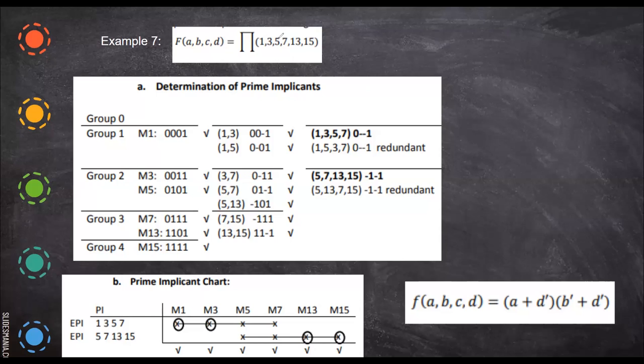Okay, now in this video, we are going to consider the product of sums for prime implicants. We are going to use the tabulation method for product of sums. So here the symbol itself shows it's a product, and these are all the max terms.